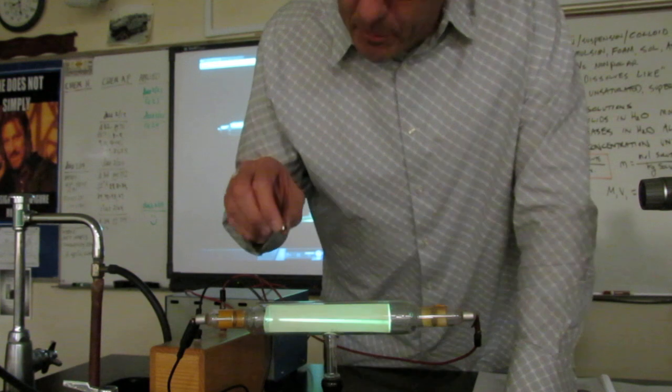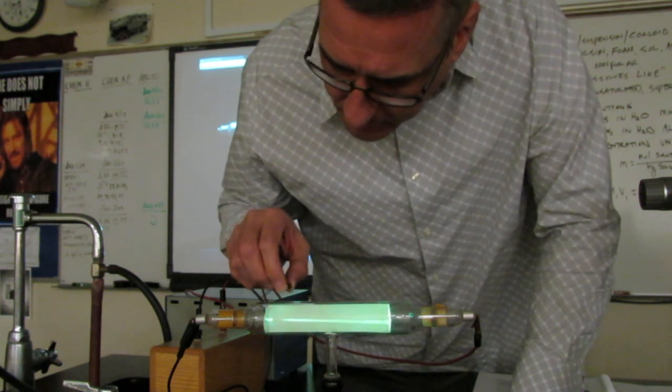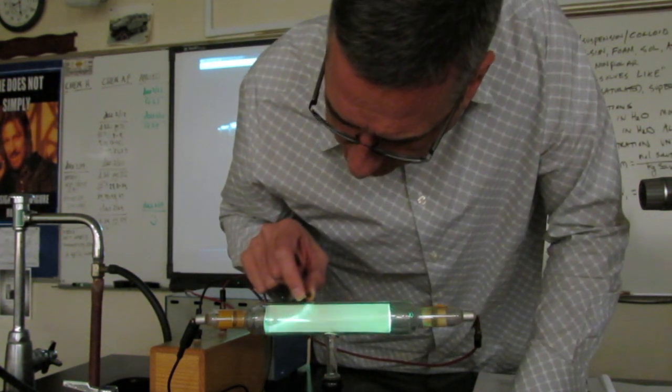Here's a small magnet and when I bring it close to the cathode ray, you can see that one end of the magnet actually attracts those rays.